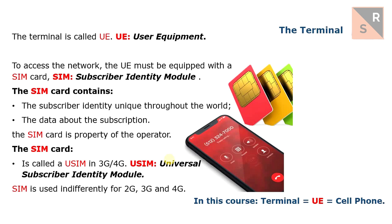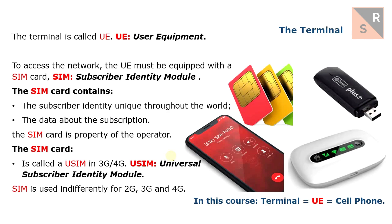The SIM card is found in equipment such as a smartphone or a tablet, but it can also be found in a 4G router that can be connected to a laptop in order to have mobile internet access. In this course, we will not show the difference between types of terminals — all terminals will be treated the same way.